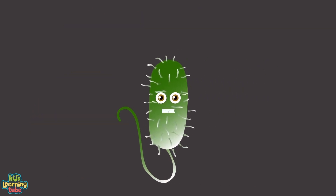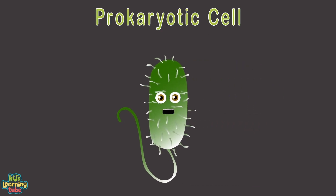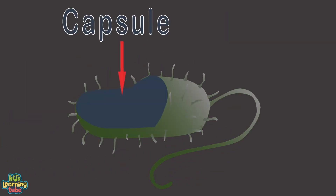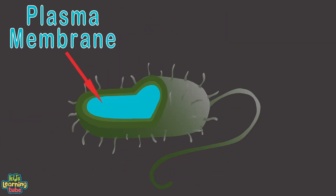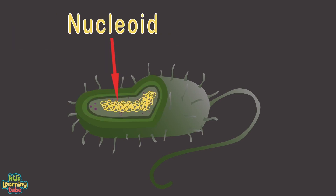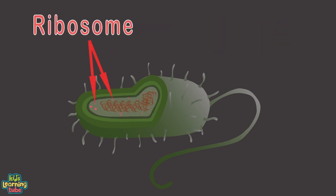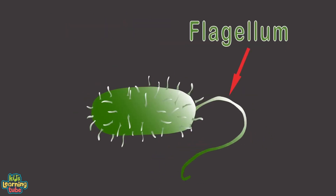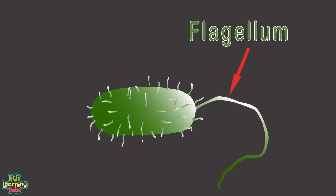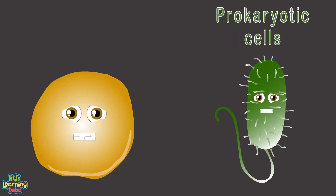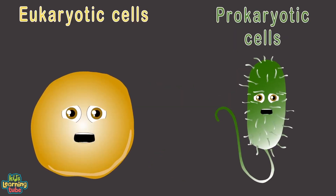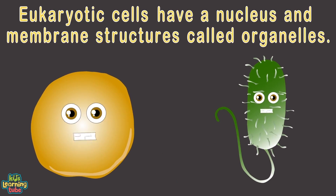Eukaryotic cells have DNA stored inside their nucleus, while prokaryotic cells don't have a nucleus — their DNA floats around inside. A prokaryotic cell has a capsule, cell wall, plasma membrane, nucleoid and DNA, cytoplasm (all the material within the cell), ribosome (a particle consisting of RNA), and a tail-like flagellum that helps it move. The main difference between prokaryote and eukaryote cells is that eukaryotes have a nucleus and membrane structures called organelles.